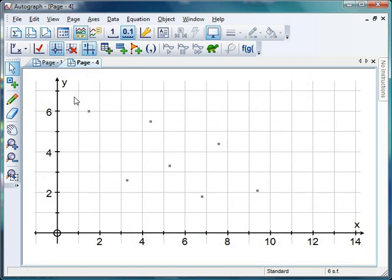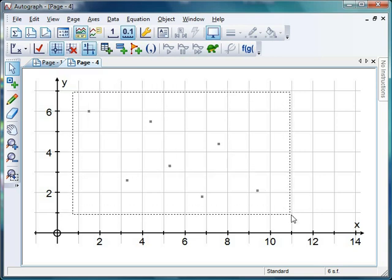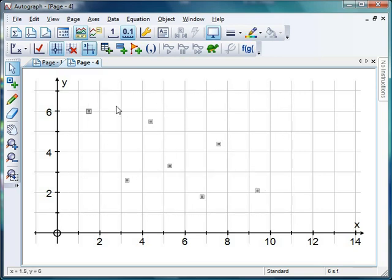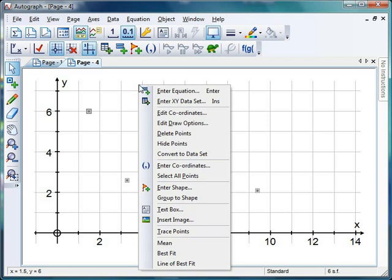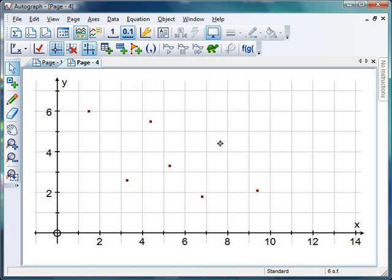Now what I'm going to do is tell Autograph that I want all those points to be part of one big data set. So I'm going to just use a bit of marquee select, just dragging around those points. They're all selected and if I go for a right click then hopefully down here there's convert to data set. Now what that means is if I click on one of those points every single point is selected.